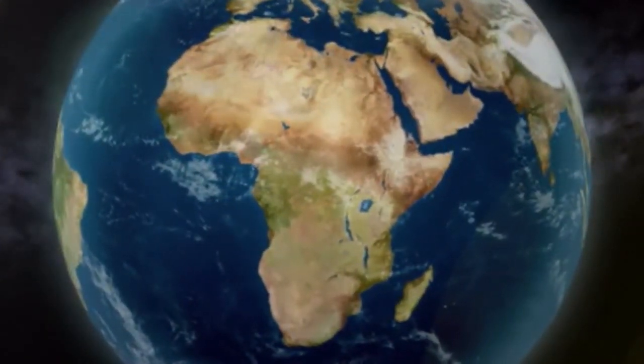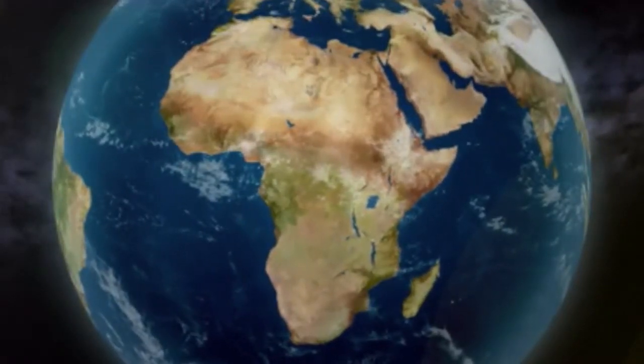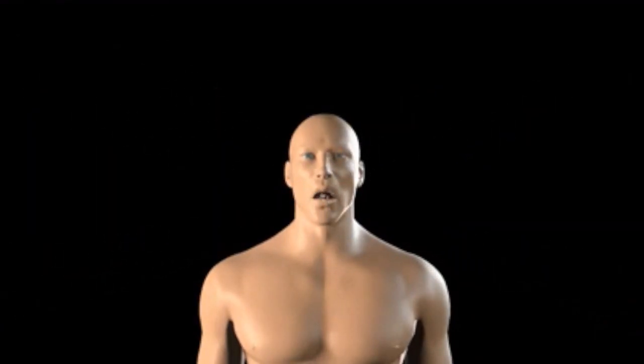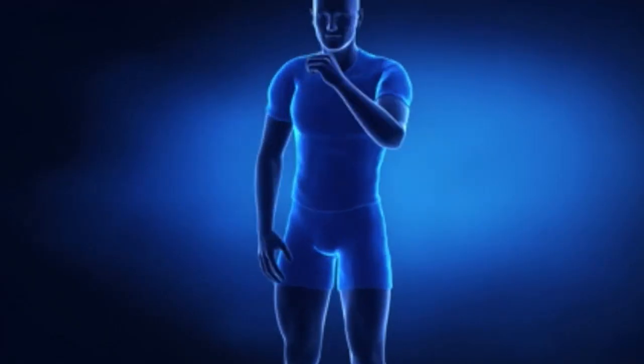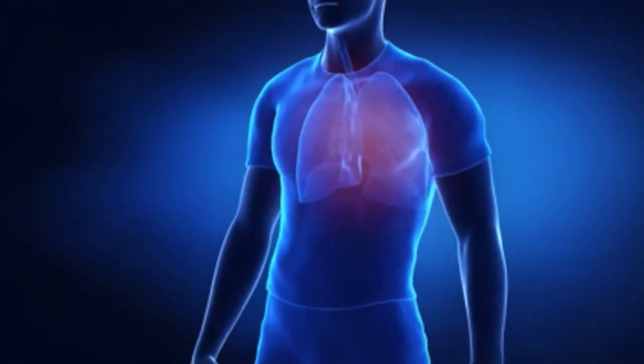TB is highly contagious. It can spread from an infected person to a healthy person through the air by inhaling airborne droplet nuclei of the infected person. These airborne particles come from the infected person through sneezing, coughing, laughing, and other forced respiratory acts, which is why someone close to an infected person on a daily basis will be at higher risk of getting infected, especially if they share the same room.